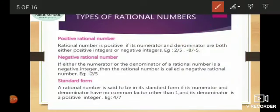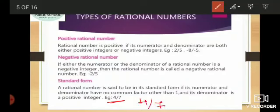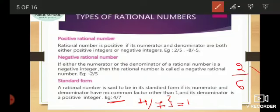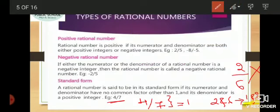Now let us see the standard form of a rational number. The standard form requires that the numerator and denominator have a common factor of only 1. For example, 4/7 is in standard form because 4 and 7 are divisible only by 1. However, 2/6 is not in standard form, because 2 and 6 share a common factor of 2. To be in standard form, the numerator and denominator must have a common factor of only 1.